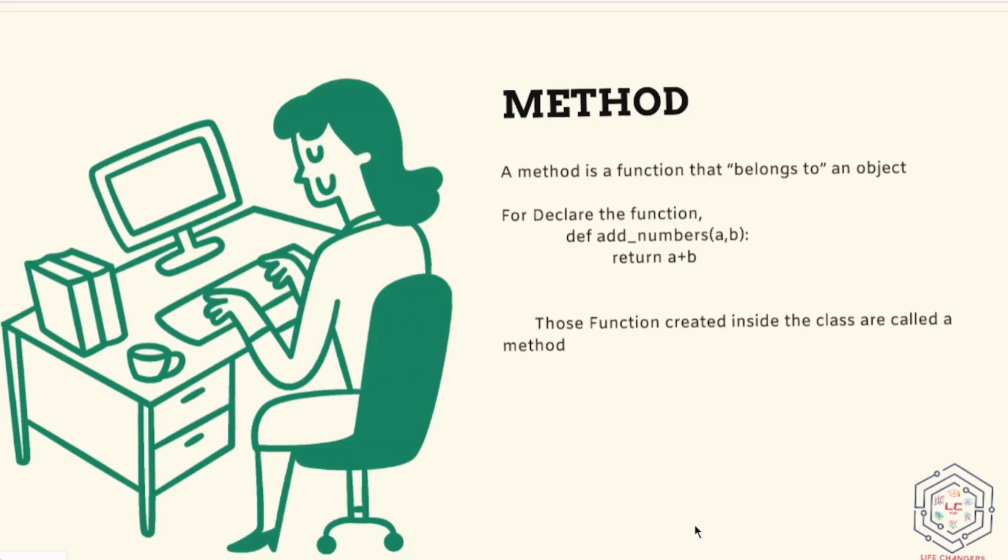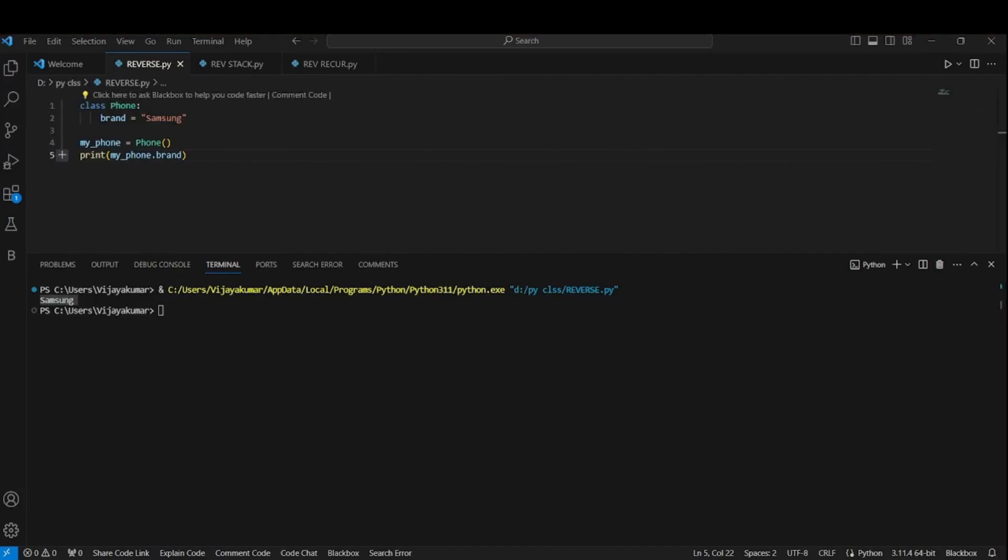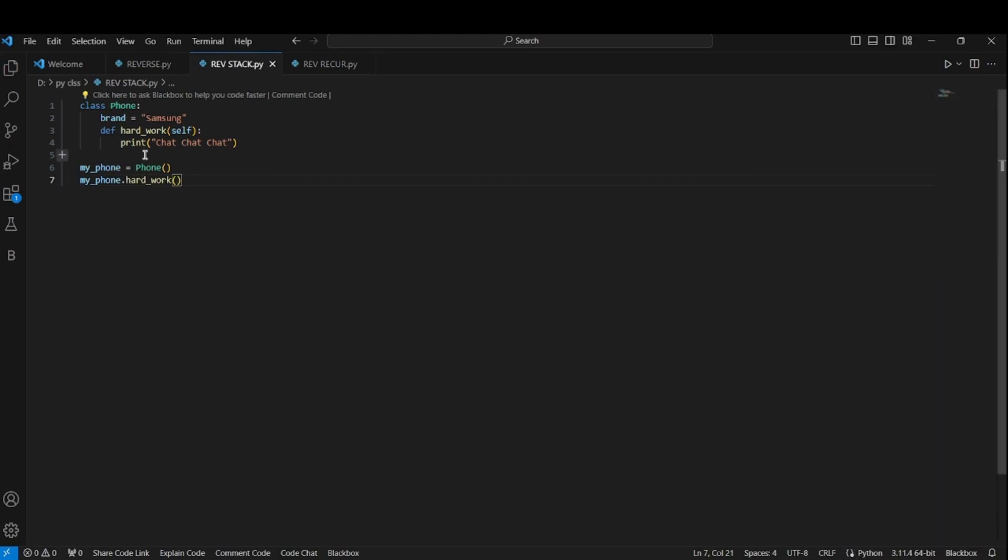Coming with how to declare a method, it's very simple. Coming to the code, this might help you to simplify the thing. You just declare a function inside the class. For example, you have the phone class. Now, you are adding the hard work method. Now, this is just a simple function inside the class. However, you always have to provide one parameter. You may or may not use this parameter. Usually, this parameter is called self.